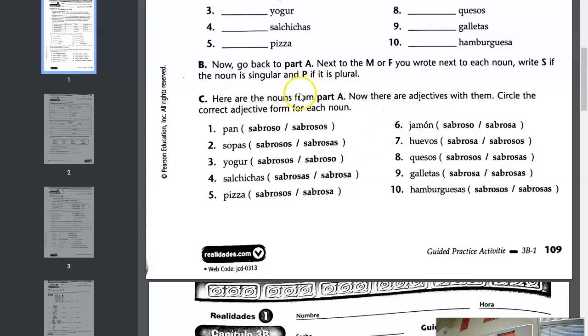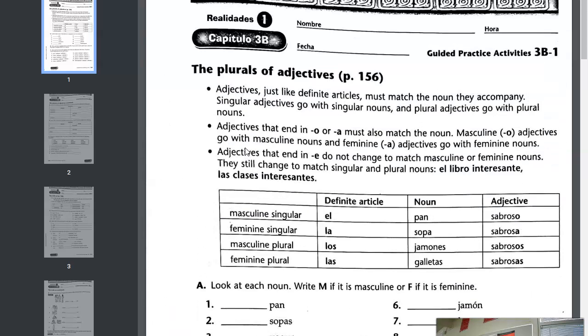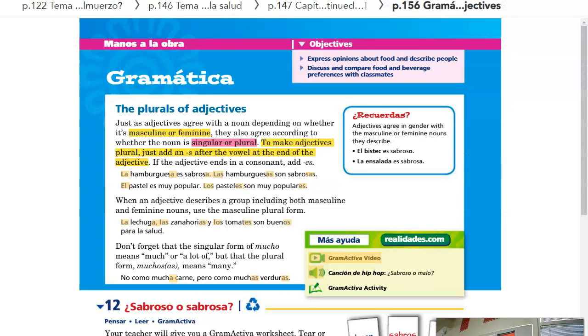For part C, you're indicating if the adjective should be singular or plural, or masculine plural or feminine plural, depending upon the noun that it modifies. Remember, nouns and adjectives in Spanish agree in two ways, in gender and in number. So the ending O or A needs to match. And the presence of S, or not having an S, also needs to match between adjectives and nouns.